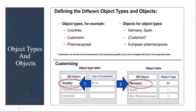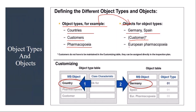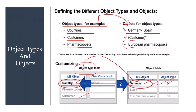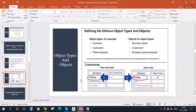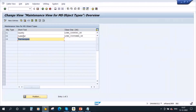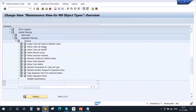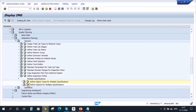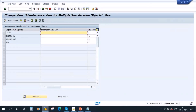Next is the objects. For each object type, you will be creating the objects. For the object type country, you create Germany, Spain, USA, UK, and so on. For customer, you enter the different customers. For pharmacopoeia, you enter things like European Pharmacopoeia, US Pharmacopoeia, Indian Pharmacopoeia. So you have object types like country, pharmacopoeia, customer, and for these object types you create the corresponding objects. Let me go back in the system to 'Define Objects for Multiple Specifications' — here you can see four different countries.